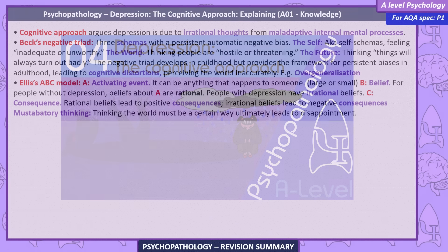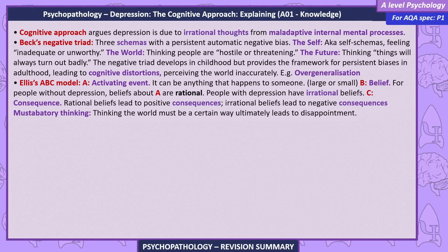Depression — the cognitive approach. Explaining: the cognitive approach argues depression is due to irrational thoughts from maladaptive internal mental processes. Beck's Negative Triad: three schemas with persistent automatic negative bias — the self (feeling inadequate or unworthy), the world (thinking people are hostile or threatening), and the future (thinking things will always turn out badly). The negative triad develops in childhood but provides the framework for persistent biases in adulthood, leading to cognitive distortions such as overgeneralization. Ellis's ABC model: A is the activating event; B is the belief — rational for people without depression, irrational for those with depression; C is the consequence — rational beliefs lead to positive consequences, irrational beliefs to negative ones. Mustabatory thinking: believing the world must be a certain way ultimately leads to disappointment.